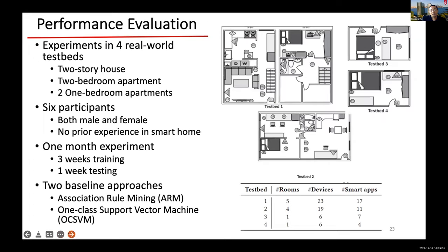We implemented the system and tested it in four real home testbeds: one two-story house, one two-bedroom apartment, and two one-bedroom apartments. Six participants lived in those four testbeds. We installed real IoT devices bought from the market — like Best Buy and Amazon — and installed smart apps from the Samsung official smart app store. Those are the numbers of rooms and devices and smart apps installed per testbed.